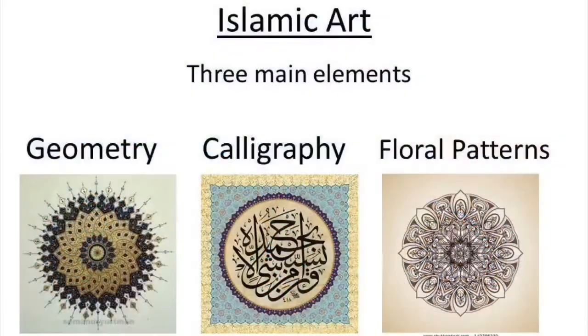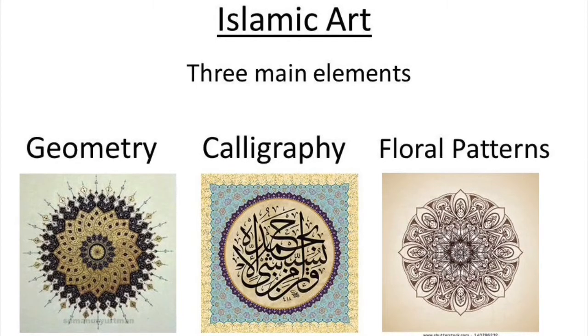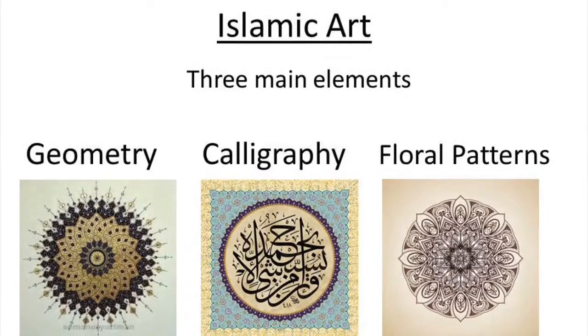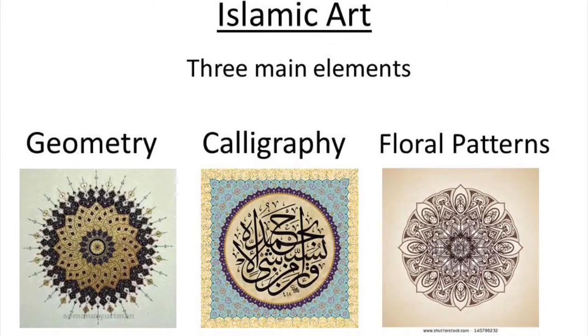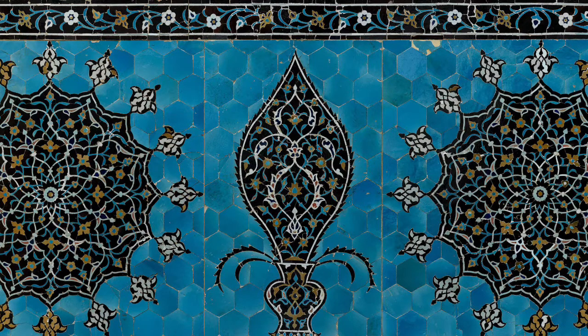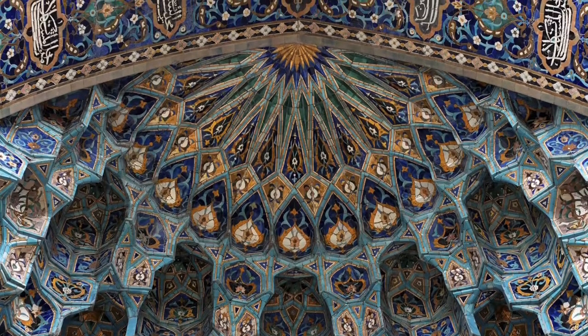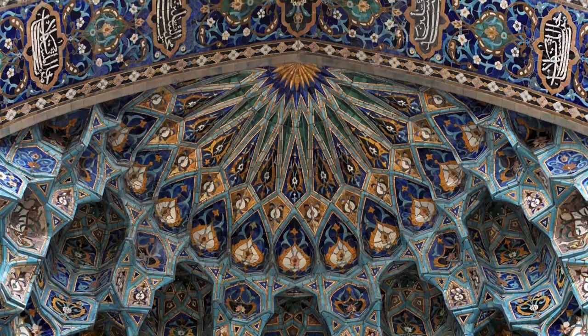In Islamic art, there are three main components: geometry, calligraphy — or their handwriting, which is in their language of Arabic — and floral patterns. Artists would use symmetry, repetition of shapes, and patterns that reflect or showed the beauty of numbers, which were considered to be divine.